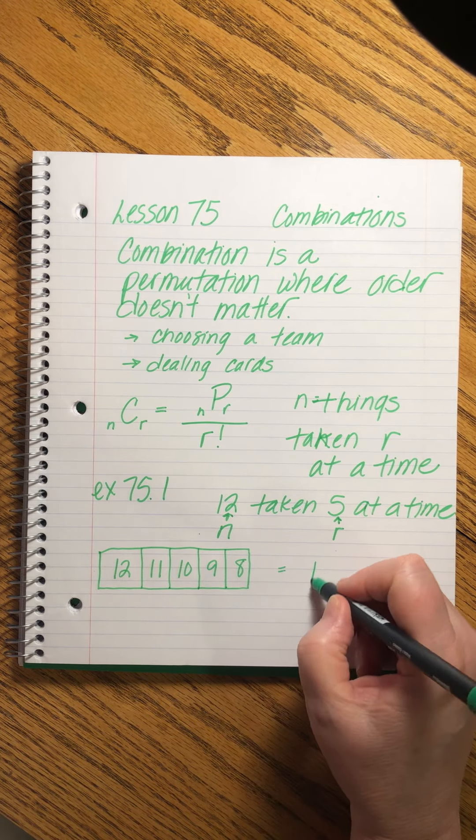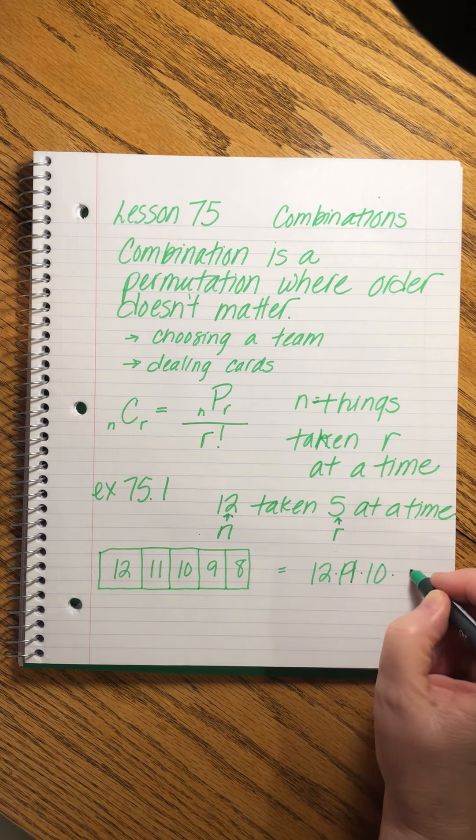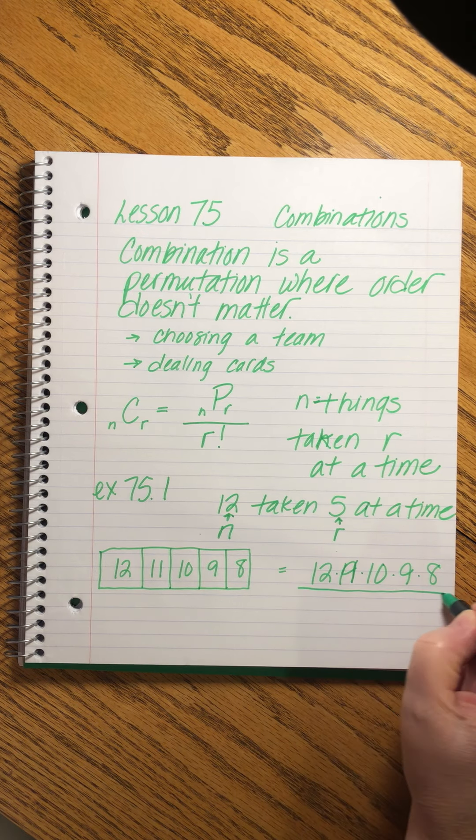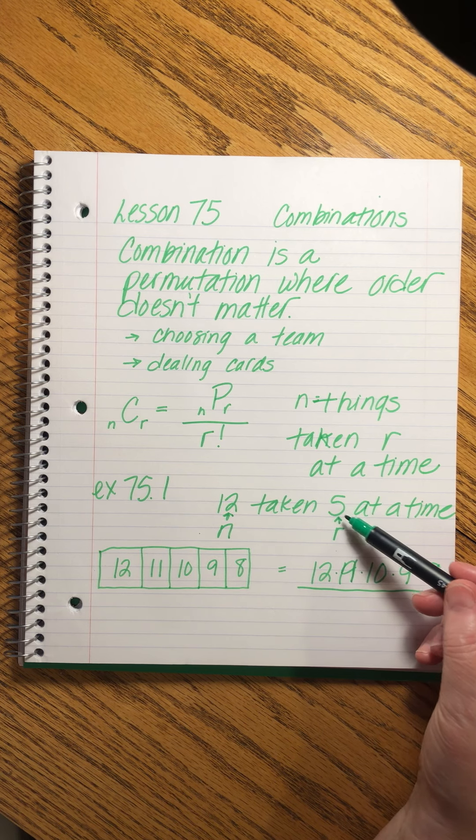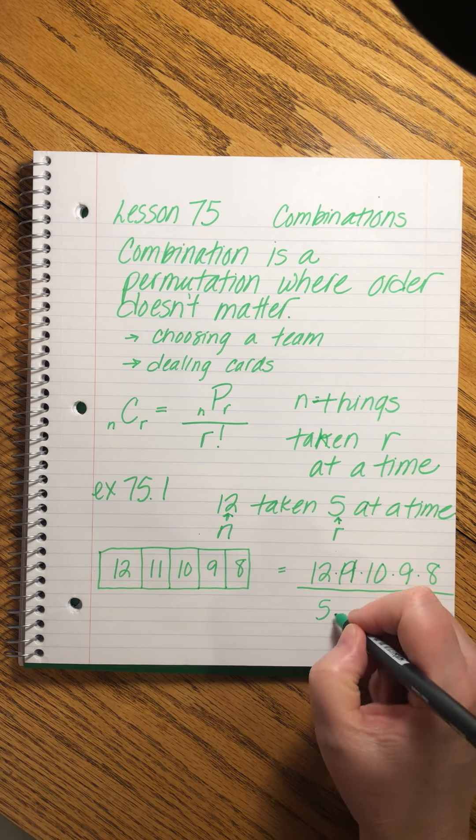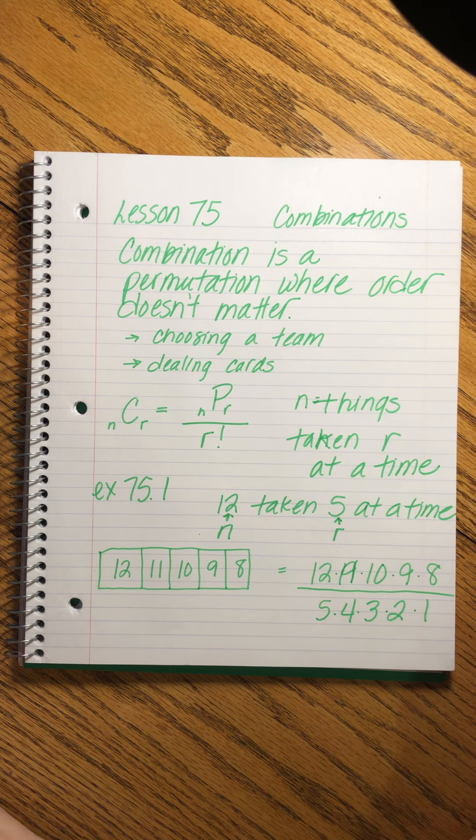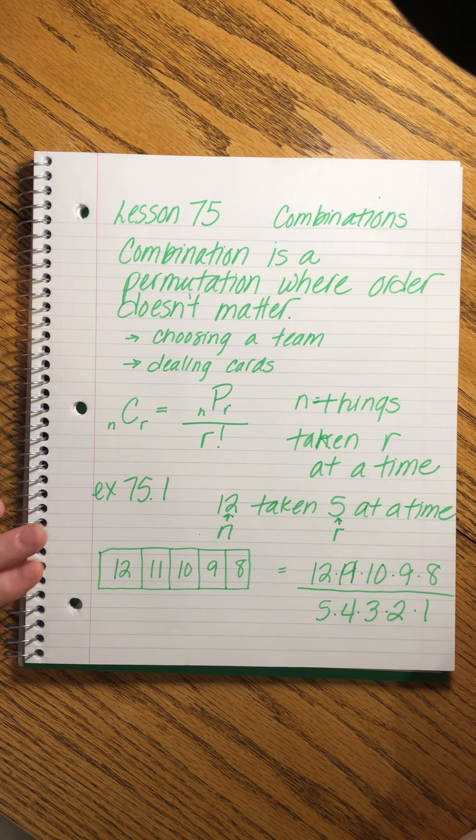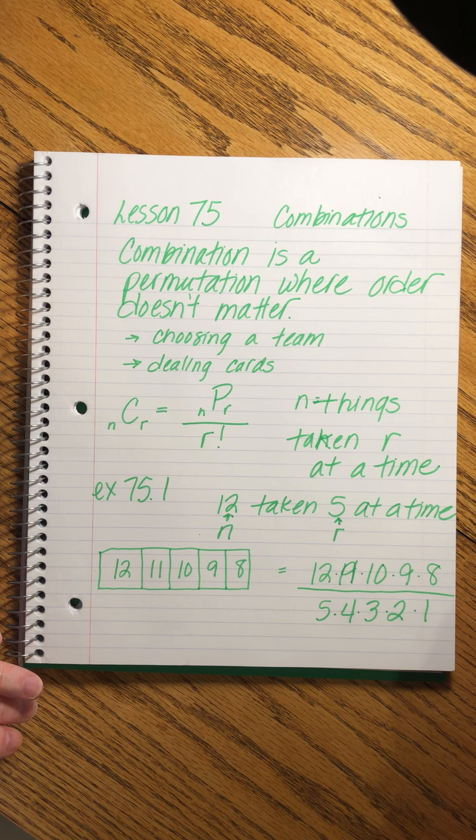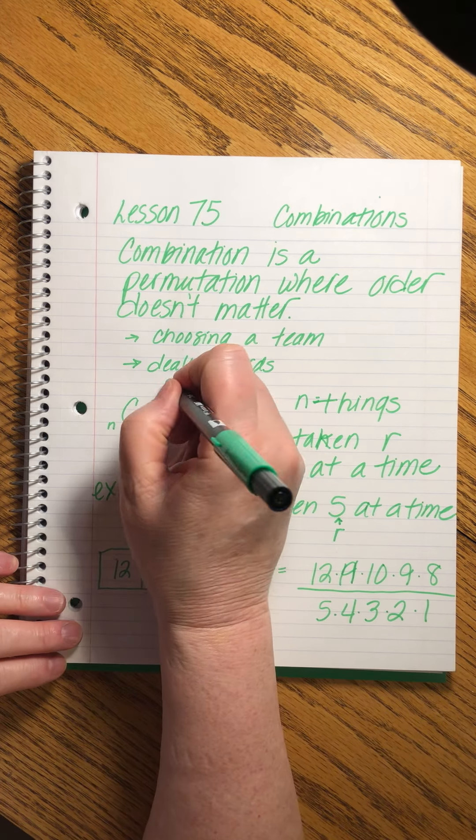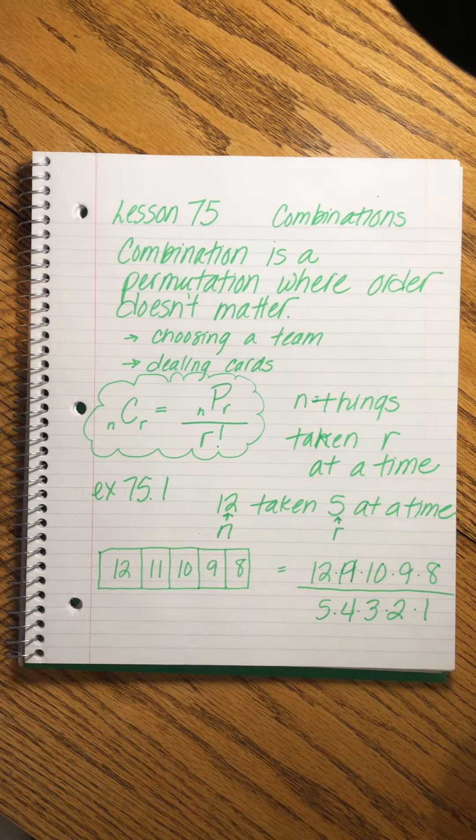So it would be 12 times 11 times 10 times 9 times 8. My hand went crazy. Divided by r factorial. r is the at a time number. So this would be 5 times 4 times 3 times 2 times 1. And at this point, we're going to use hand calculation. Sorry. I meant to go back and put this in a puffy cloud of knowledge.